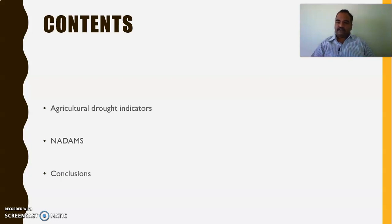We will first see the five agricultural drought indicators, followed by the role of NADAMS in our country, and lastly we will conclude the topic with an assignment.